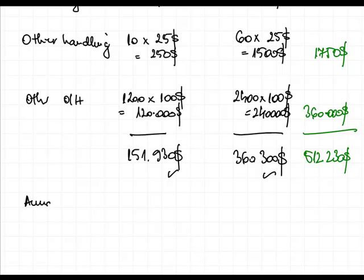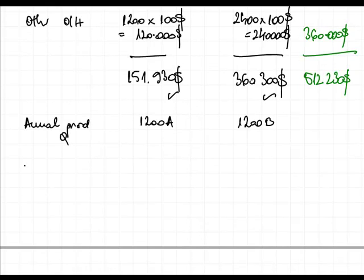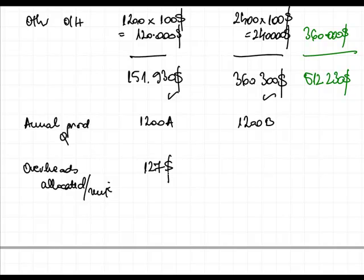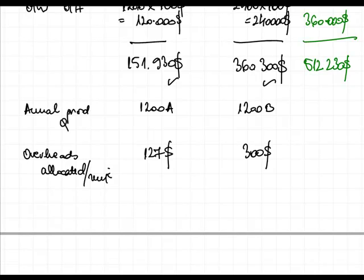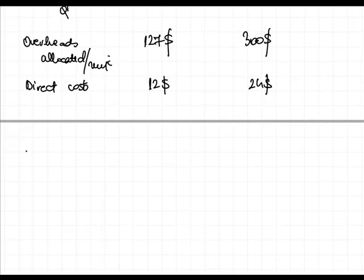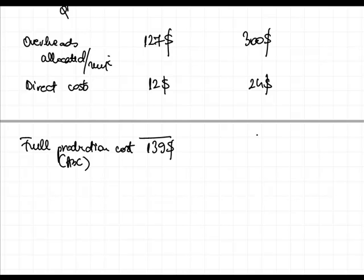The annual production quantity is 1,200 units of A and 1,200 units of B. That means overheads allocated per unit amount to $127 for product A and $300 for product B. Adding the direct costs — $12 for product A and $24 for product B — we end up with a full production cost under the ABC method of $139 for product A and $324 for product B.